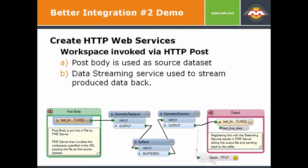Another thing we found is people would have data on their local desktop or as part of an application, and they wanted to trigger a workspace via URL to process the data. Before, they would have to save that data to a file, upload the file, run the workspace to get it back. Now what we've done is through a single HTTP POST call, you can post data to FME with a URL like everybody's familiar with. FME Server will grab that POST body, save it in a file, and pass it to a workspace as the source dataset. This enables you to easily publish an FME workspace and use it as a transformation service.